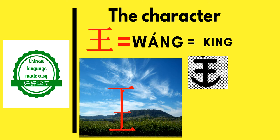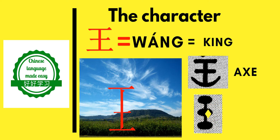A third interpretation is that this character represents a string of jade beads. Jade was a precious stone that could only be afforded by royalty. Three jade stones, or a string in which jade stones were fixed, would be referred to as a king. So the character 王 (wáng) could represent these strung jade beads.